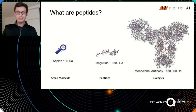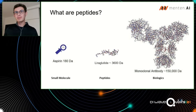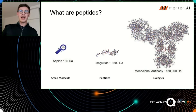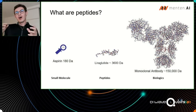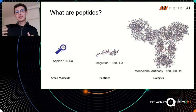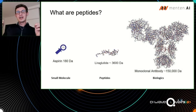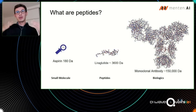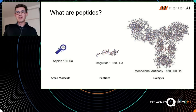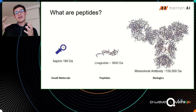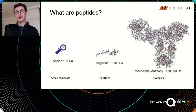One of the challenges in creating peptides is that as molecules get larger, they are harder to design. Especially for peptides, most are linear molecules and they tend to be floppy. Floppy molecules are very hard to stabilize and to make them bind to a target of interest.